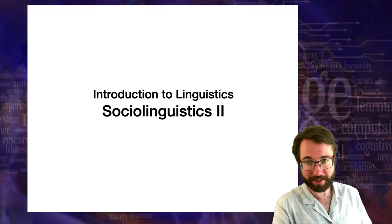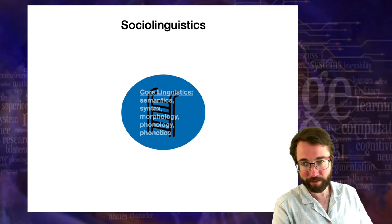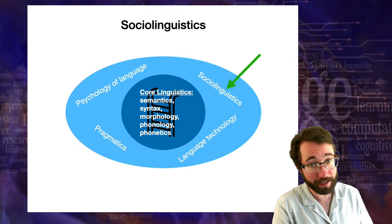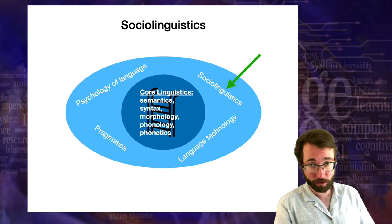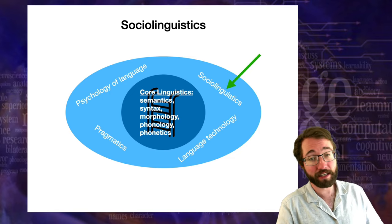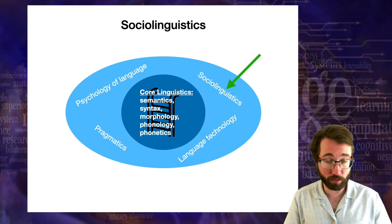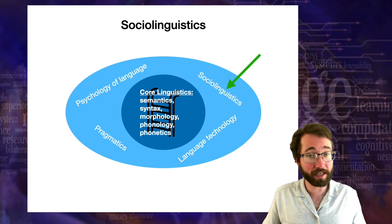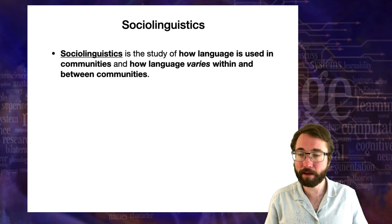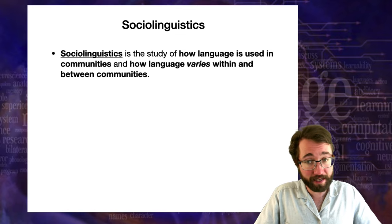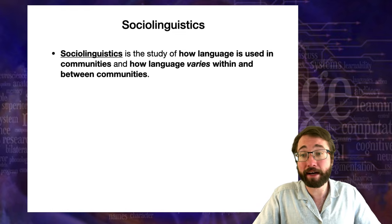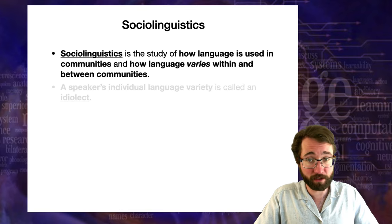Welcome back to sociolinguistics. We are applying the knowledge we gained in core linguistics about the nuts and bolts of how language worked in order to describe how language is structured within a society, and in particular the ways that language varies within a society. Sociolinguistics is exactly that — the study of how language is used in communities, large communities, and how language varies within and between those communities.